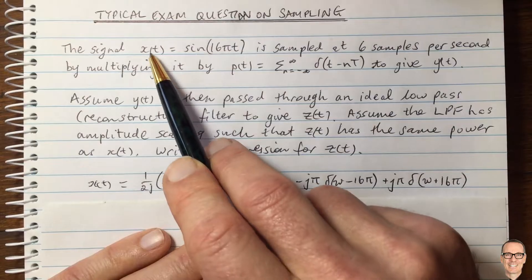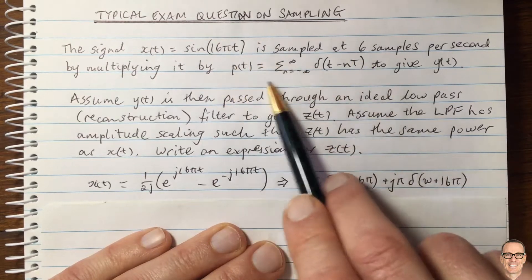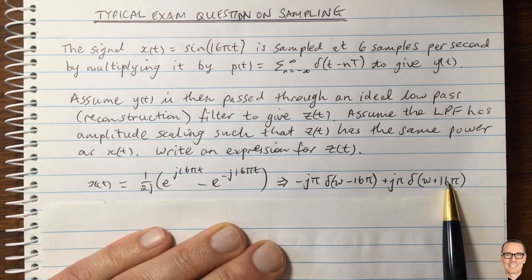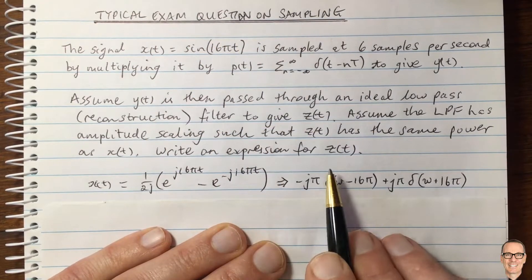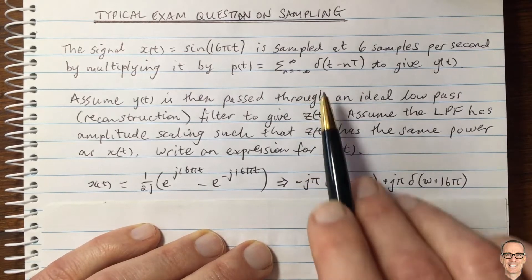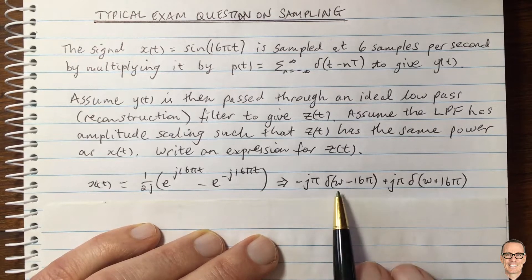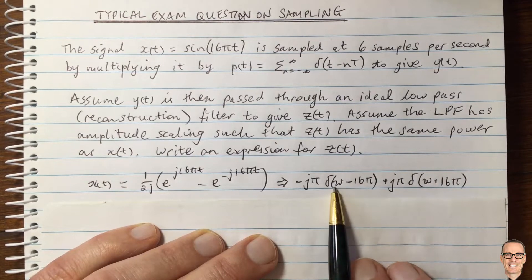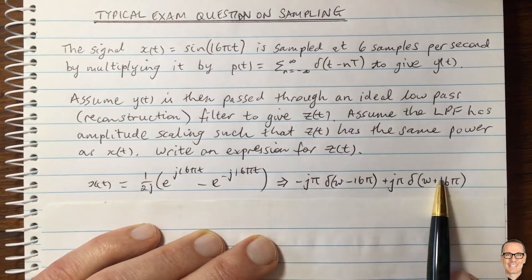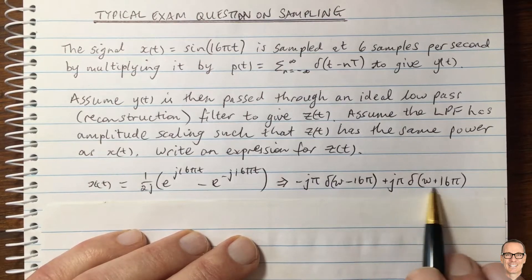We know the property that if you multiply in the time domain, you convolve in the frequency domain. So you could work out the Fourier transform of the impulse train p(t), and then convolve it with this expression and do all that mathematically. But one reason this is a typical exam question is that lecturers want to know if you understand what's going on, not just that you can do a lot of mathematics. So let's think about this using the key sampling property.